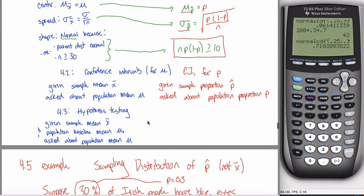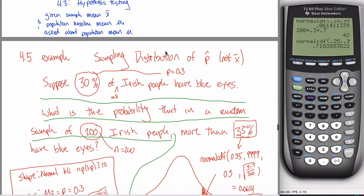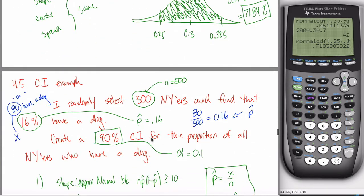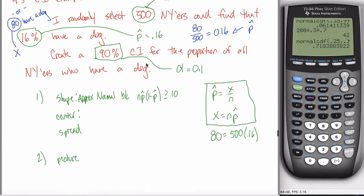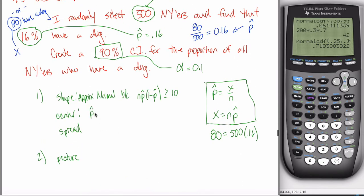Center: When we did confidence intervals before, the center was x-bar — the point estimate. The analogous thing here is p-hat. So p-hat is our center, our point estimate, and p-hat = 0.16. Note: if I had only told you that 80 of them have a dog, you'd have to take 80 divided by 500 to get 0.16 before writing it as the center.